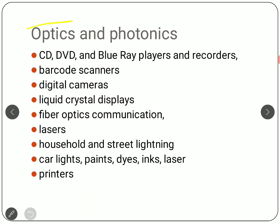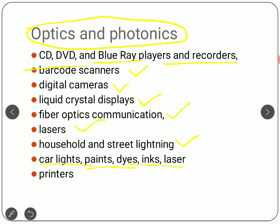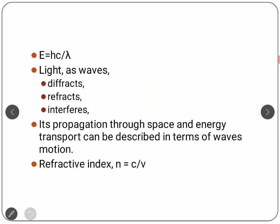Optics and photonics is a totally different branch in physics and you can do more specialization in it. Applications include devices like CDs, DVDs, and Blu-ray players; barcode scanners which use low-power lasers; digital cameras; liquid crystal displays and LEDs; fiber optics communication mostly used for internet technology; lasers; household and street lighting; car lights, paints, dyes, inks, and laser printers. These are all part of optics and photonics, and we can see that there is a lot of application there.